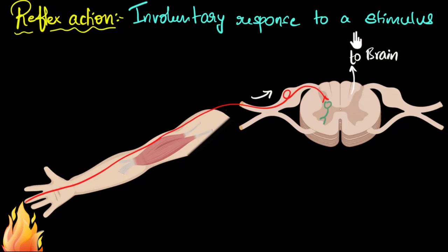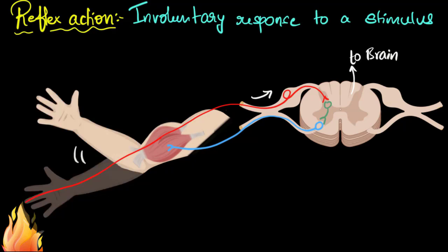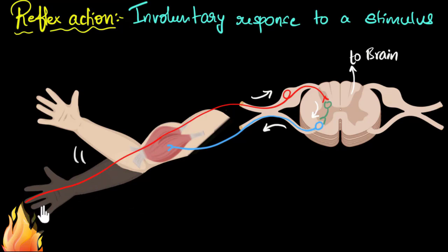Usually, once the signal is sent to the brain, the brain processes it and then decides what to do. But in this reflex action, that's not what happens. It does not wait for the brain to give the command. The signal from this neuron is immediately sent to yet another neuron, which sends that signal directly to the bicep muscle. The bicep contracts, pulling my hand, and as a result my hand moves away from the fire. The speciality of reflex action is that it immediately redirects the signal to the muscle and the reflex action is carried out — automatically, without thinking.